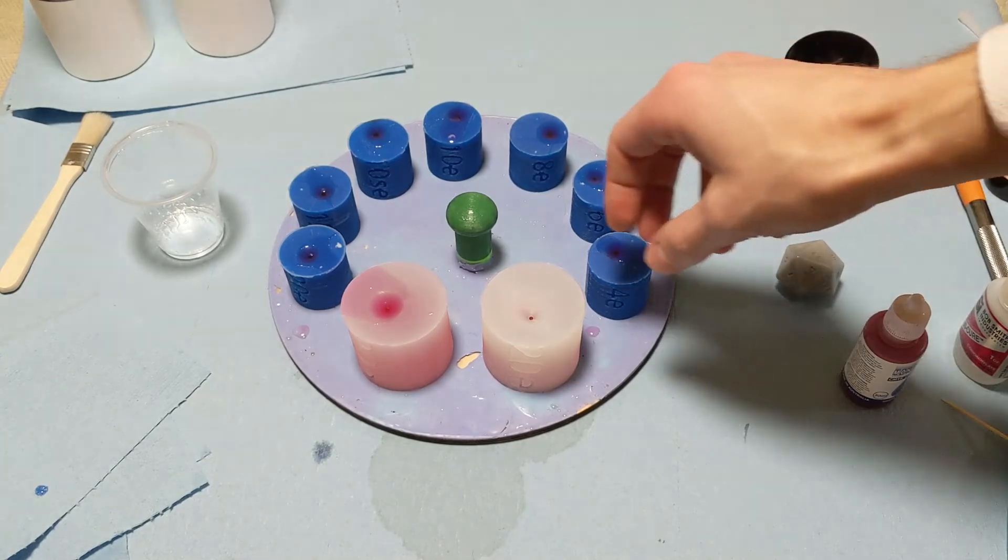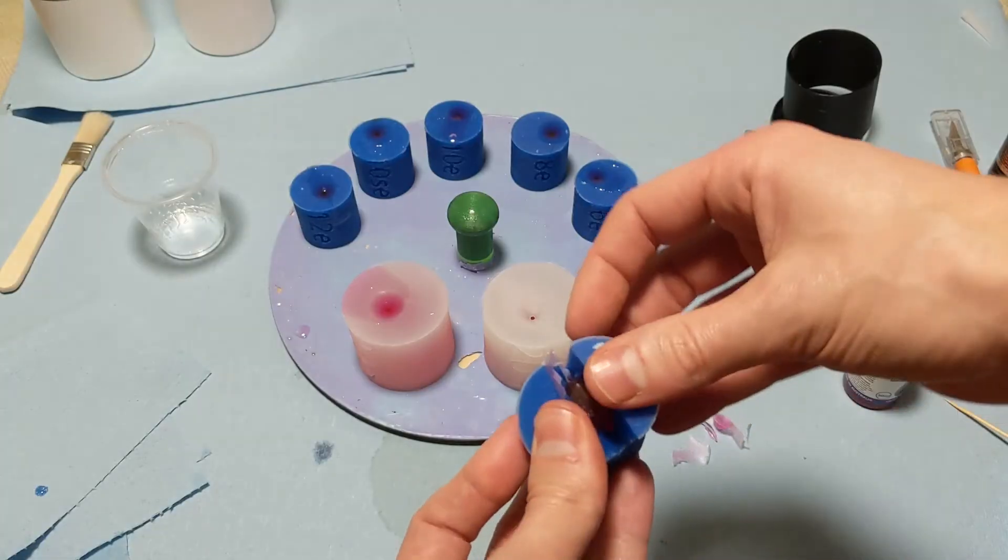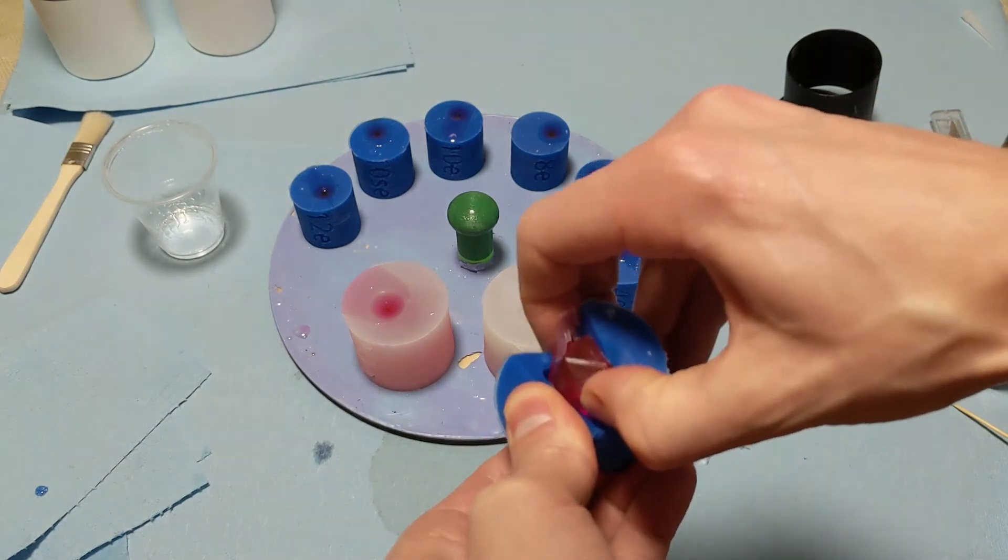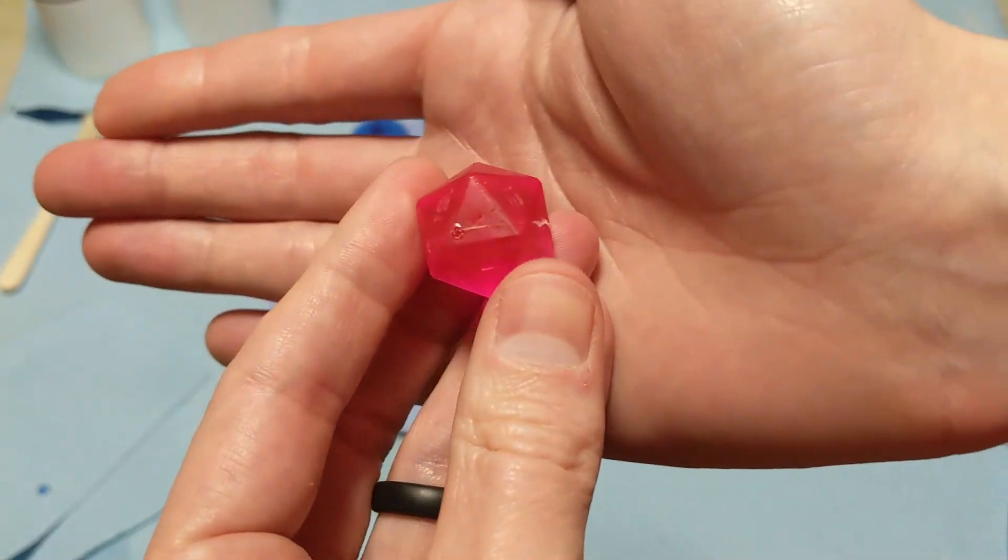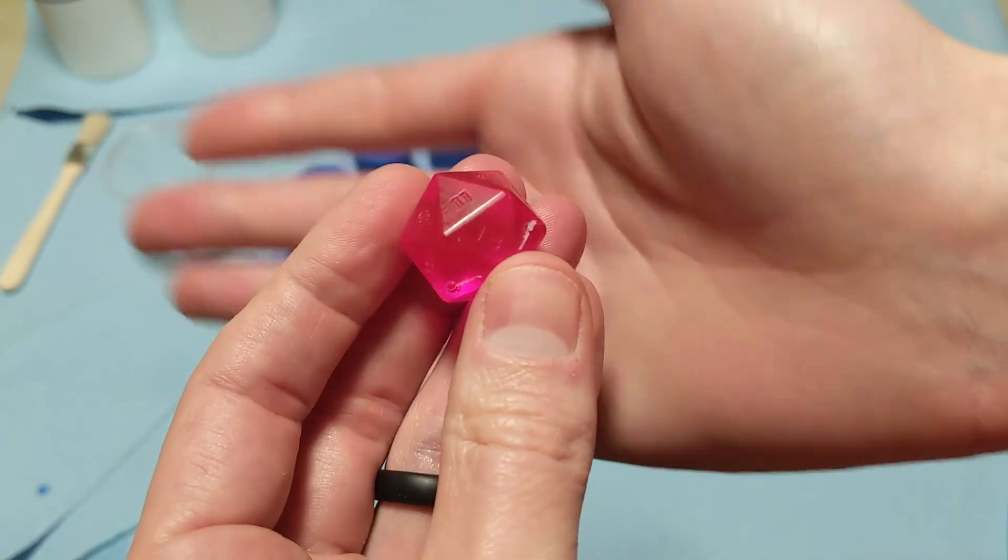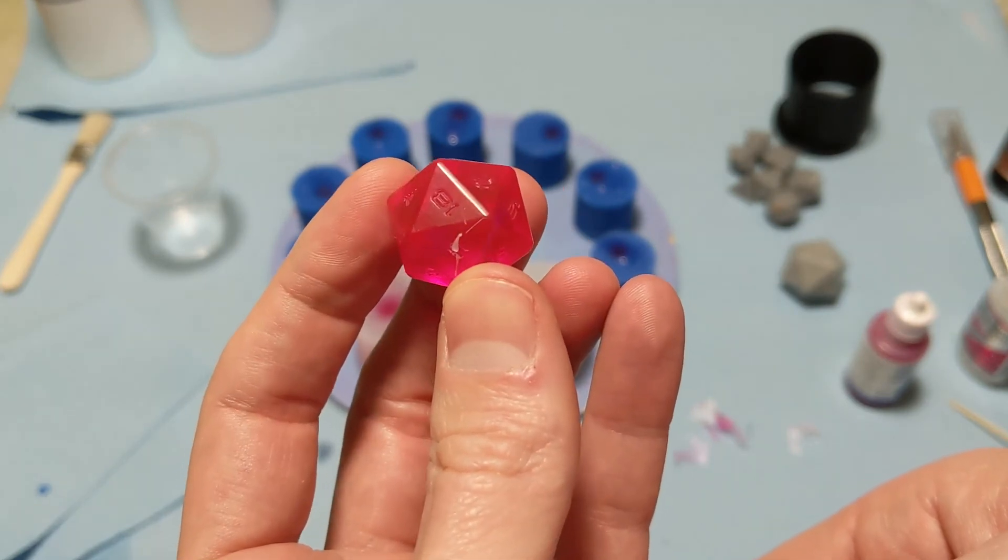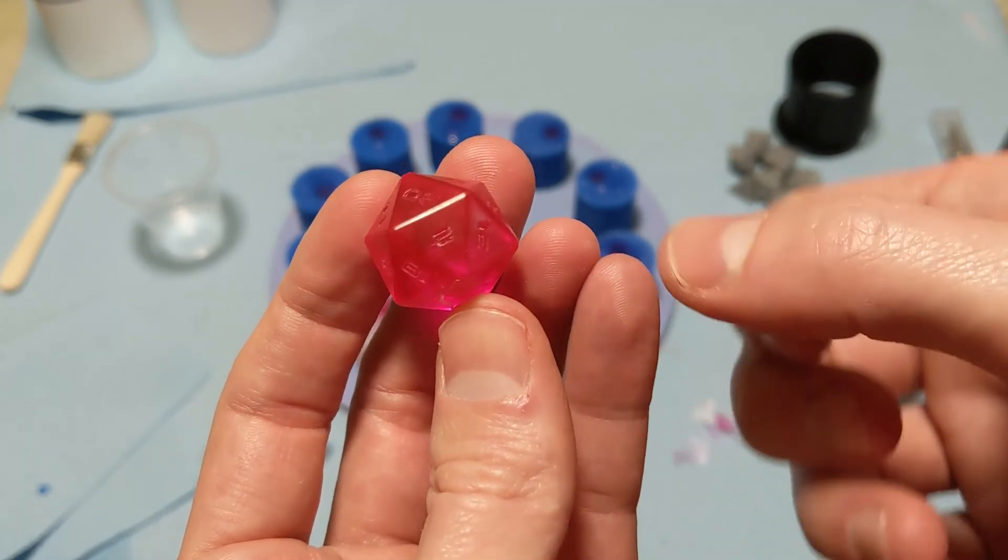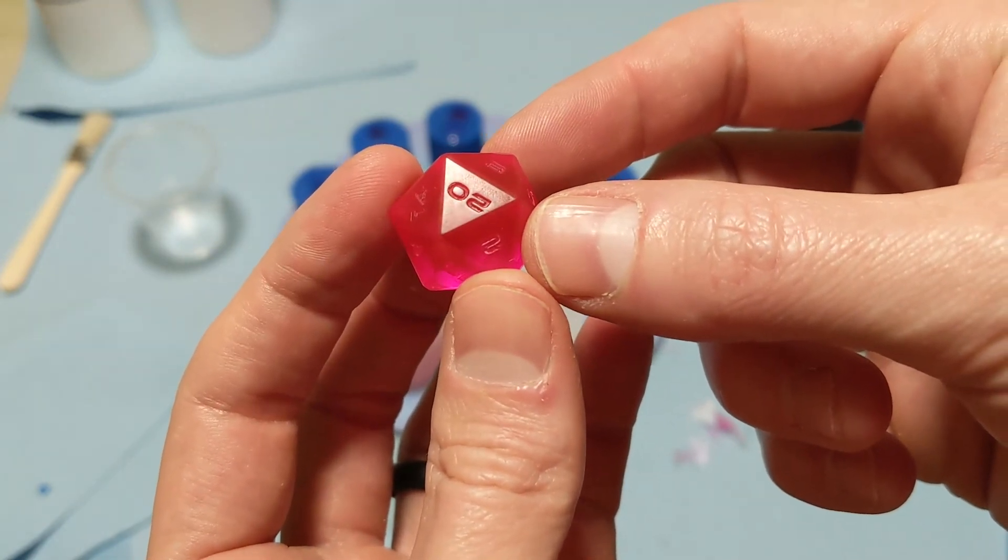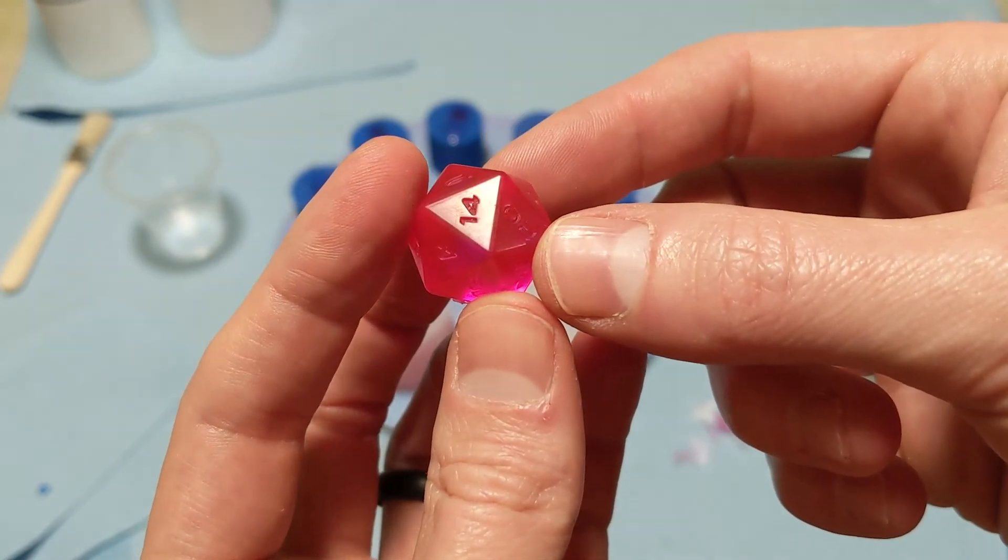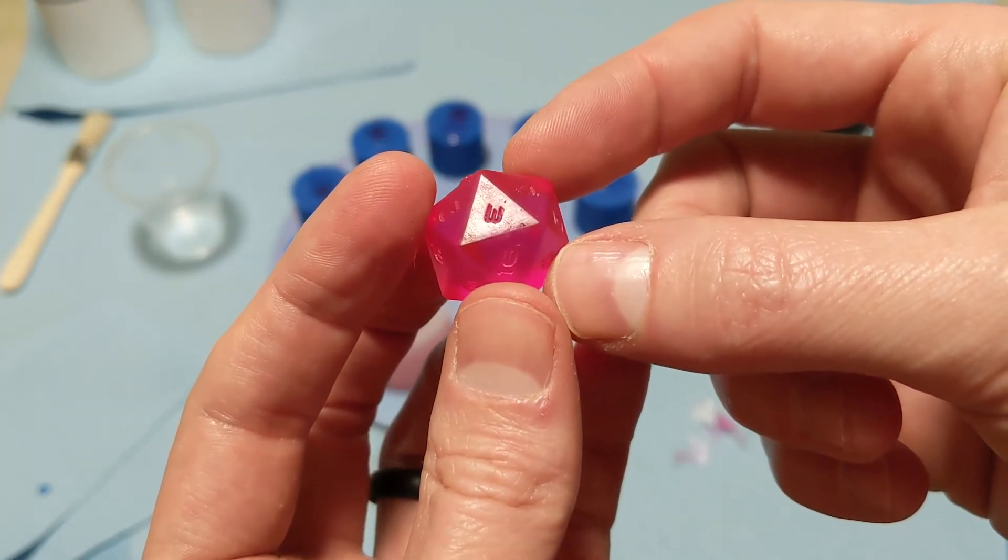Once it's cured, I'll go ahead and take those new master dice out, and as expected, they do have that kind of a liquidy, oily look to them from coating them in Inhibit X and with the ease release. So you'll definitely have to do a lot of sanding on all of the faces, all of the edges, get that to be see-through, glass-like perfect, and then go ahead and make molds of those, and you won't have to use anything but your platinum silicone, and it should work excellently.